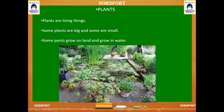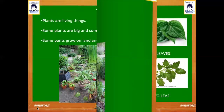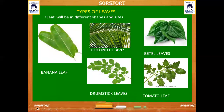We can see many plants around us — they are living things. Some plants are big and some are small. Some plants grow on land and other plants grow in water. Here are different types of leaves; you can see the various sizes and shapes of the leaves of different plants.